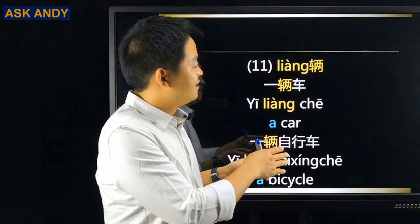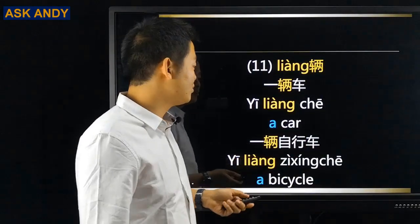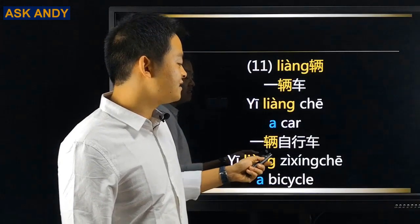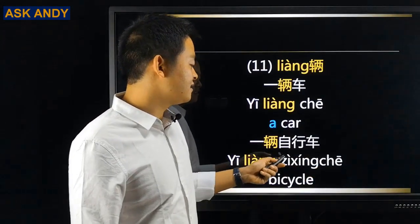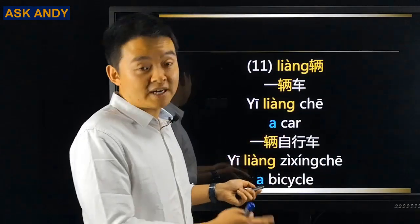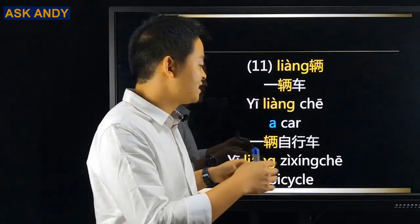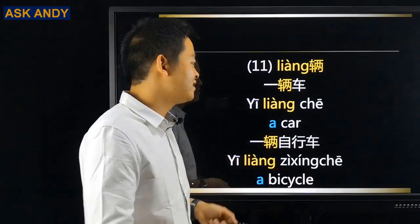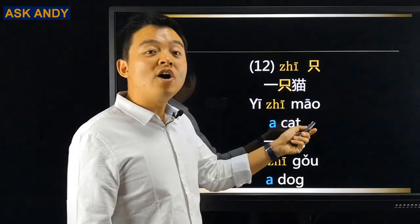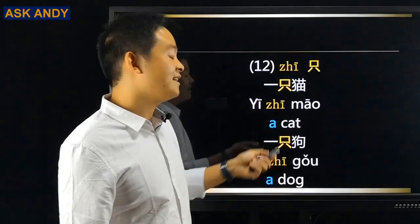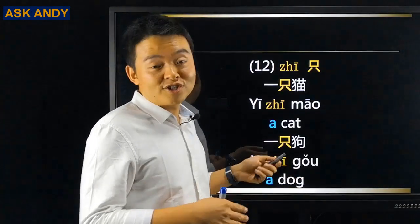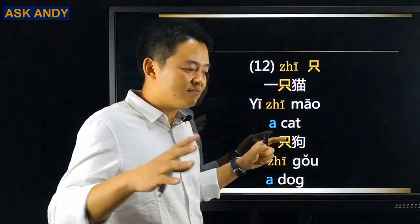Number eleven: 辆. For example, 一辆车 — a car. And 一辆自行车 — a bicycle. So 辆 is the measure word for vehicles like cars, bicycles, or motorbikes. Number twelve: 只. For example, 一只猫 — a cat. And 一只狗 — a dog. So 只 is the measure word for small to medium-sized animals.